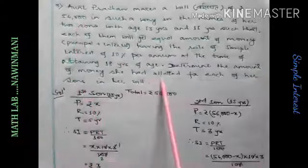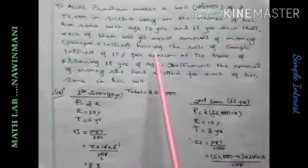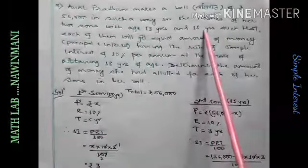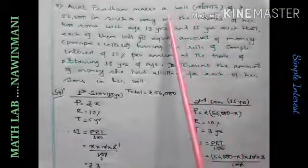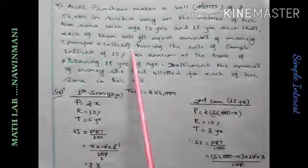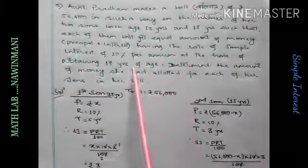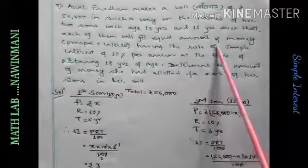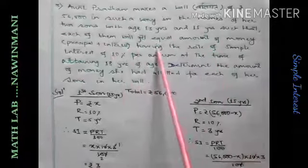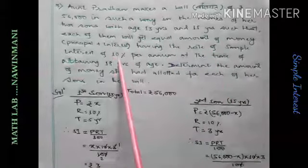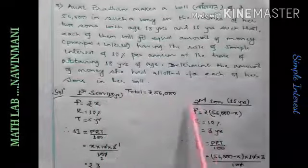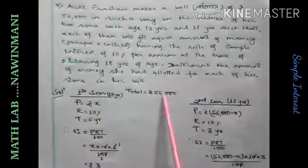His total money is 56,000. And he has two sons. Thirteen years and fifteen years. And that money he deposits in bank such that when they both reach 18 years, the money they receive should be equal. Same as previous. Equal amount of money received. Rate of interest bank gives 10%. We have to find how much deposited for each. Out of this.